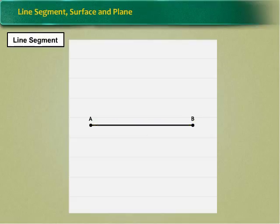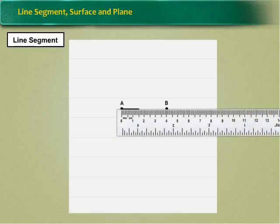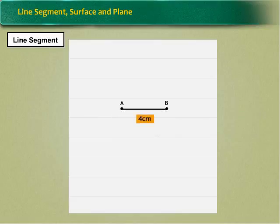The distance between the two end points of a line segment is its length. The length of AB can be denoted by AB. Example: AB equals to 4 cm. That means the length of line segment AB is 4 cm. It can be measured using a ruler.